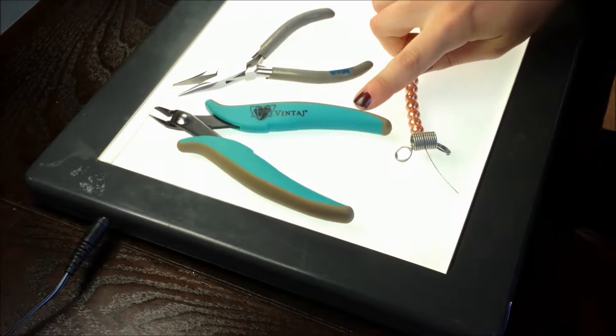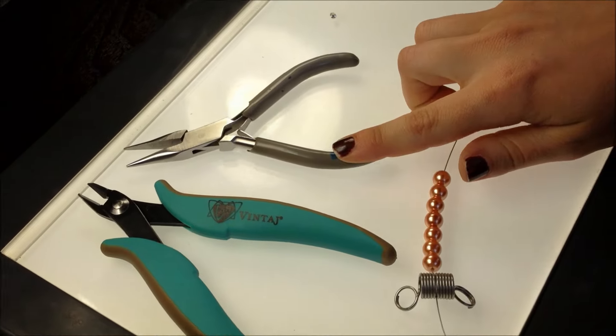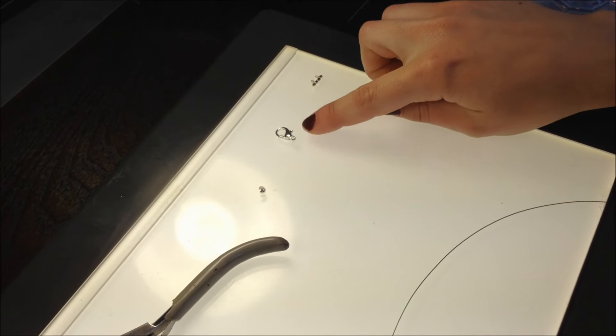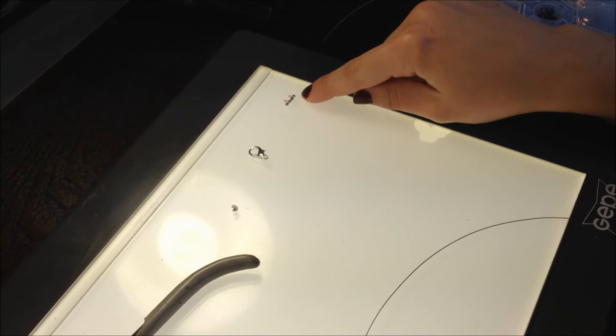The materials you will need are wire cutters, flat nose pliers, your strung beads on wire, a crimp cover, a lobster claw, and crimp beads.